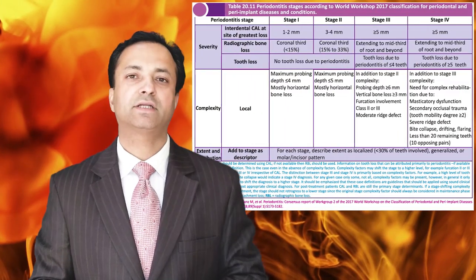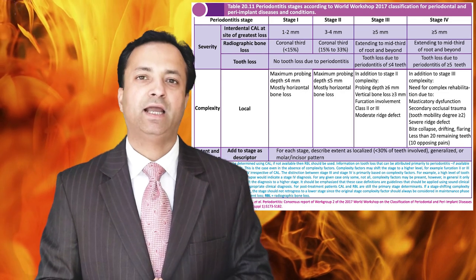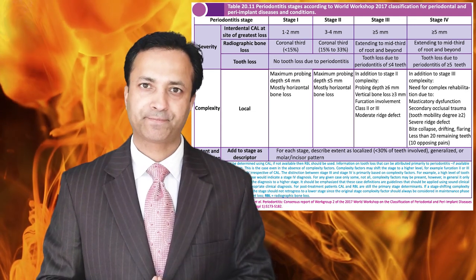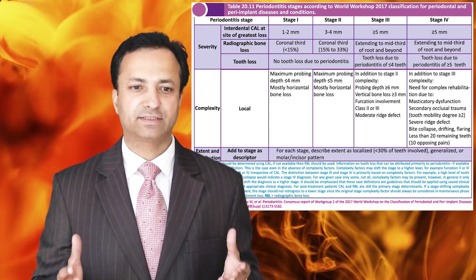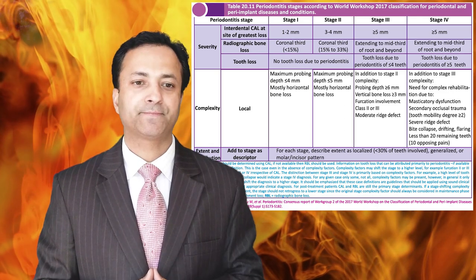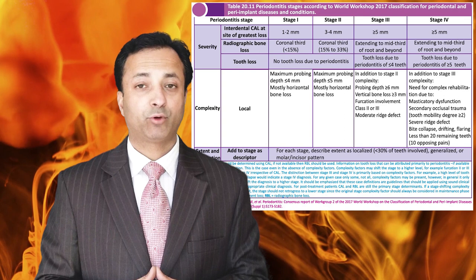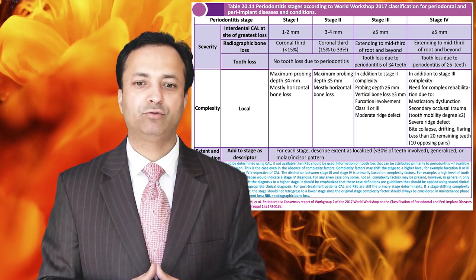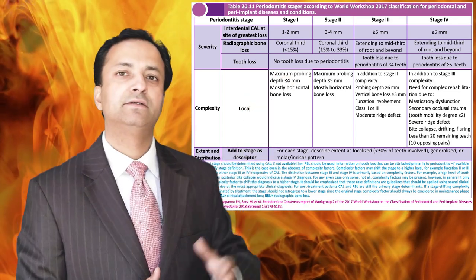This table describes the staging system of periodontitis. On the top there are stages: Stage 1, Stage 2, Stage 3, and Stage 4. The criteria include severity, complexity, and extent and distribution. Severity is calculated by measuring the interdental clinical attachment loss at the site of greatest bone loss, radiographic bone loss, and tooth loss with reason. Complexity is described by estimation of probing depth — a probing depth of 6 mm or more is a complexity factor — along with masticatory dysfunction, bite collapse, secondary trauma from occlusion, drifting or flaring of teeth, and fewer than 20 teeth remaining.